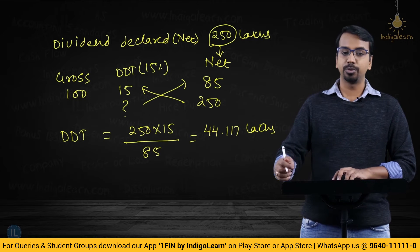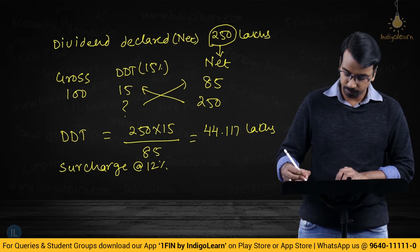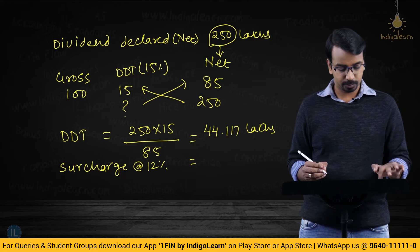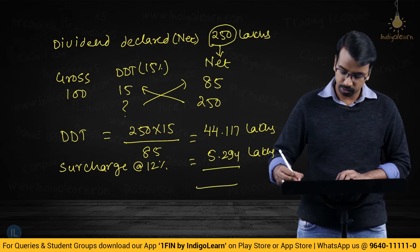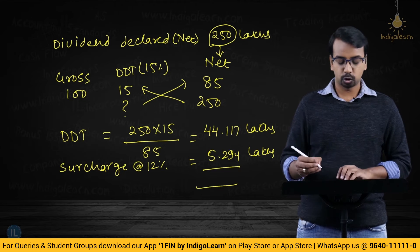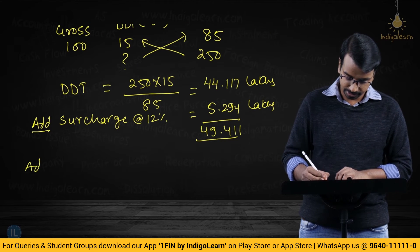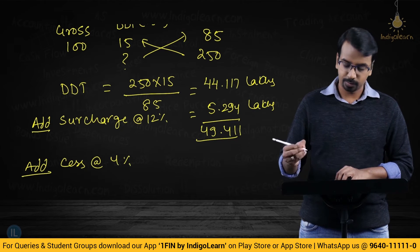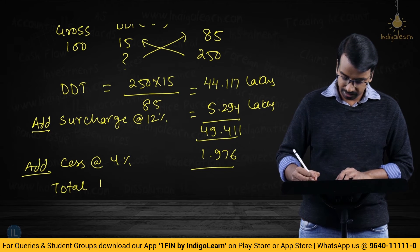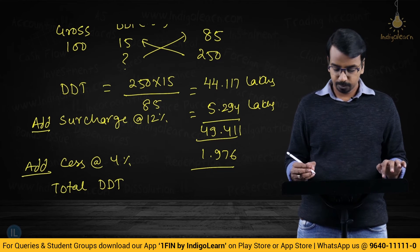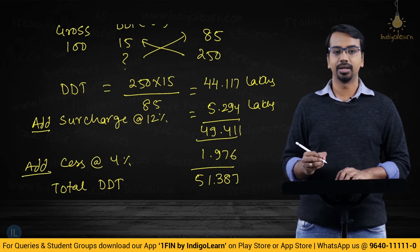Now if Dividend Distribution Tax is 44.117 lakhs, we have to add surcharge at 12%. So 44.117 × 12% = 5.294 lakhs, giving a subtotal of 49.411 lakhs. On this we add cess at 4%, which is 49.411 × 4% = 1.976 lakhs. So total Dividend Distribution Tax including surcharge and cess is 49.411 + 1.976 = 51.387 lakhs.